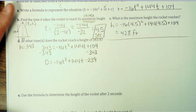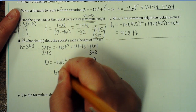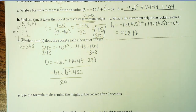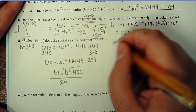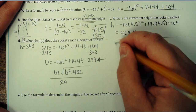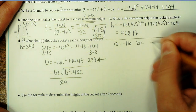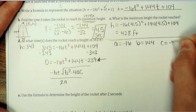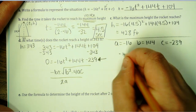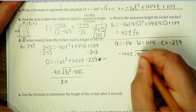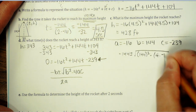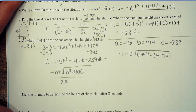Here's your quadratic formula: negative b plus or minus square root of b squared minus 4ac, all over 2a. Once your quadratic is set equal to zero, identify the a, b, and c values. So a is negative 16, b is 144, and c is negative 239. We're just plugging this into the calculator: opposite of b would be negative 144, plus or minus the square root of 144 squared minus 4 times negative 16 times negative 239, all over 2 times negative 16.